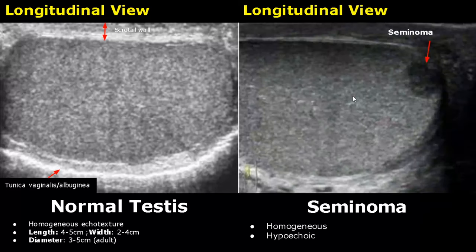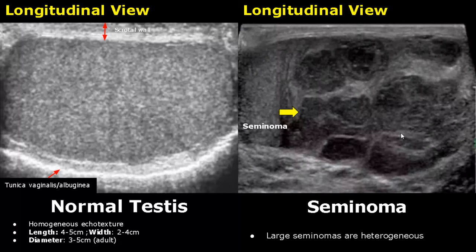A seminoma is a type of germ cell tumor. Usually it appears as a homogeneous hypoechoic mass. If the mass is large it can appear heterogeneous.